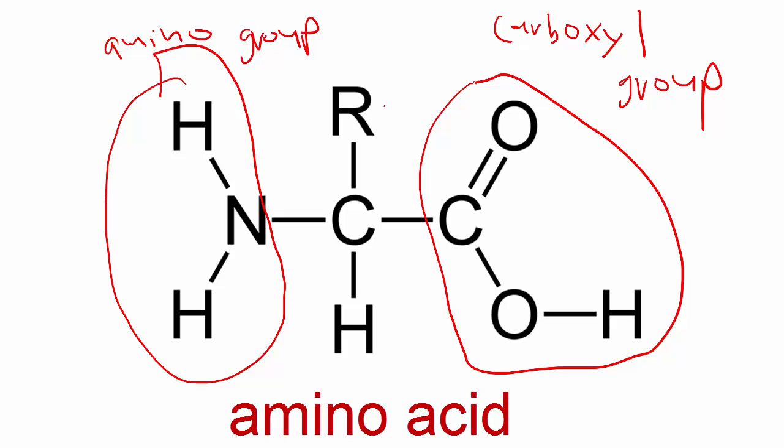The middle part has an R group right here. And this is where amino acid diversity lies. You see, there are 20 amino acids, and each one is defined by its unique sidechain. So, this R right now is acting as a variable for one of the 20 sidechains.